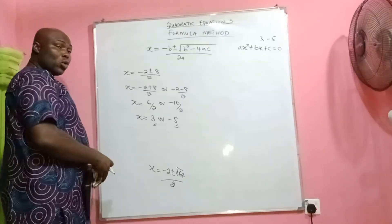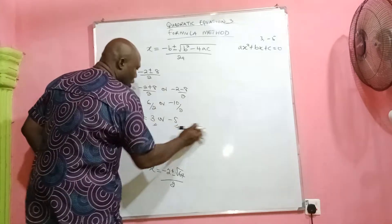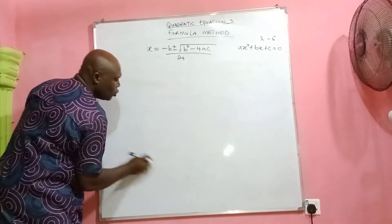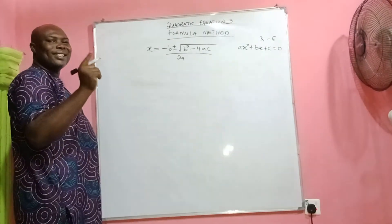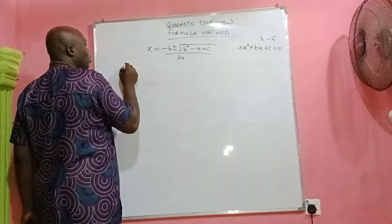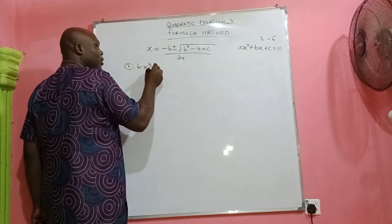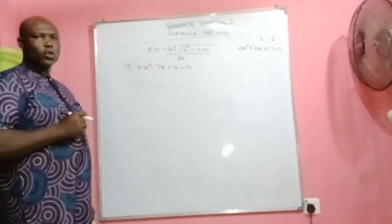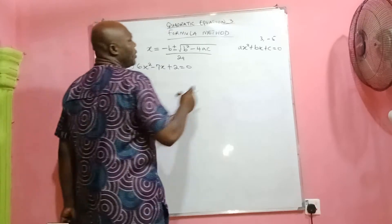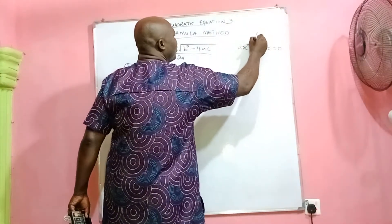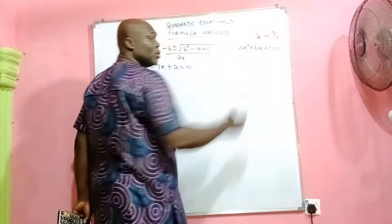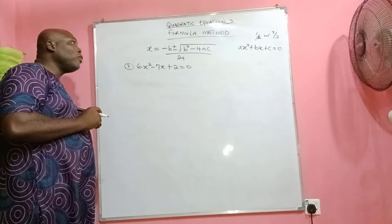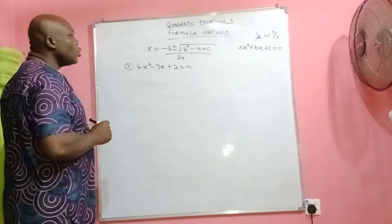Now let's go straight to number 2. In number 2, I remember vividly that we solved 6x² − 7x + 2 = 0, and we arrived at two answers: 1/2 or 2/3. Let's see if we also solve by the formula method and still get the same two answers.